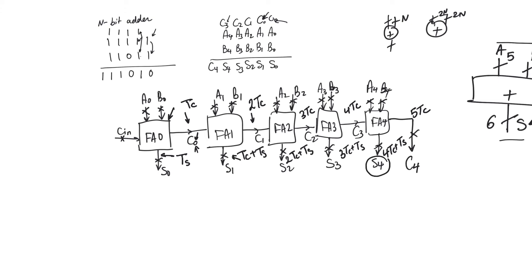And obviously, S4 is ready the last. Now, the question is always, is it S4 or C4? Because S4 is ready later than S3, as its delay is obviously longer. But its delay is also longer than C4, because 4TC plus TS is greater than 4TC plus TC. So S4 is going to be ready later than C4. And S4 is actually the last thing to be ready. And therefore, the delay of this 5-bit adder is 4TC plus TS.